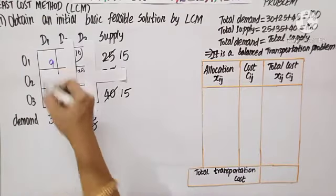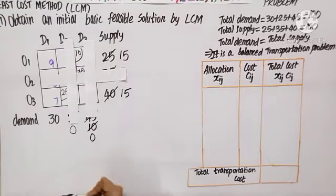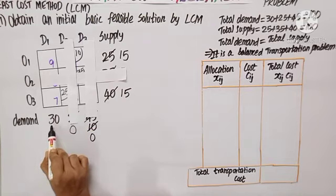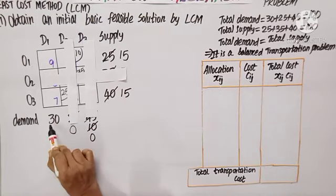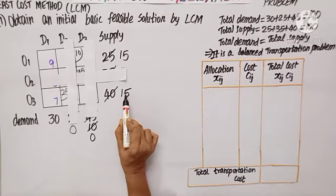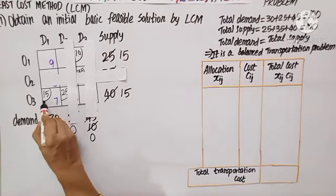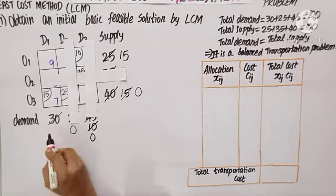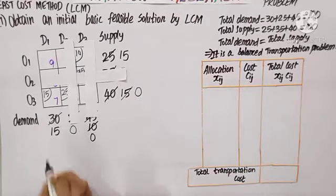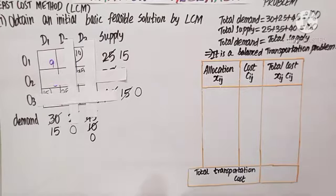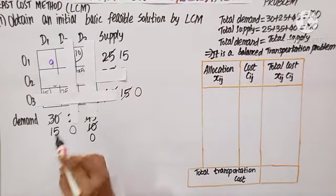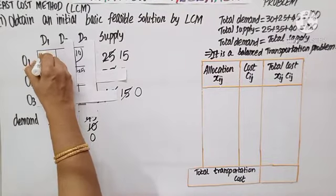In the remaining two cells, costs are 9 and 7 — so 7 is the minimum. Here I have supply 15 and demand 30. Out of 30 and 15, the minimum is 15. So I allocate 15 here — this becomes 0, and 30 minus 15 gives 15. We can hide this row. Only one cell is left, with both supply and demand equal to 15, so we allocate 15 here.